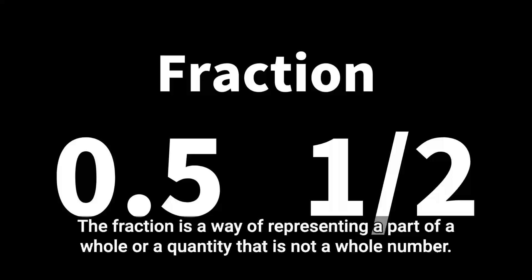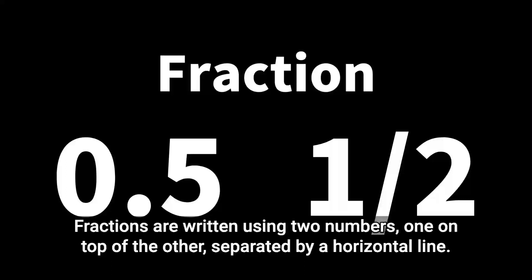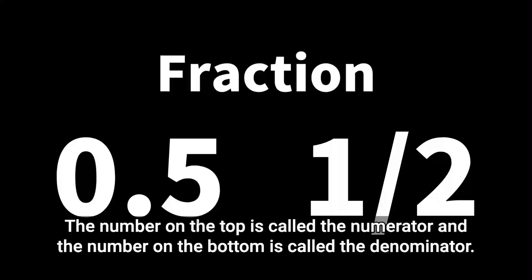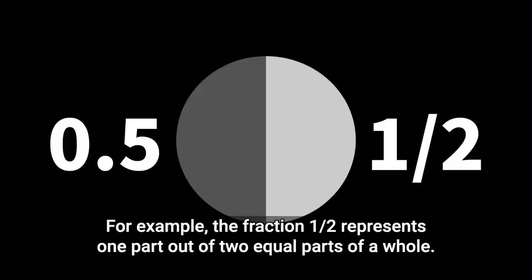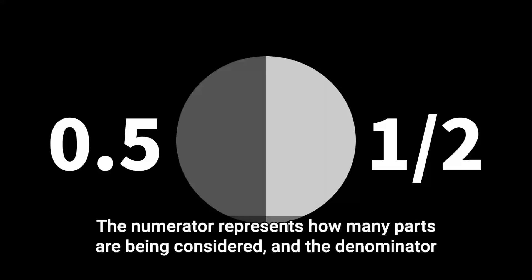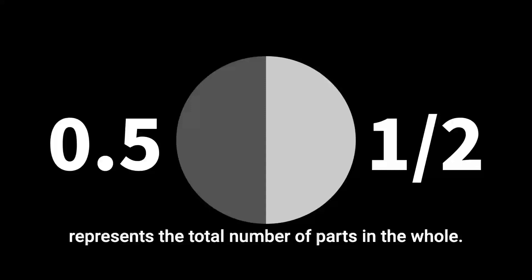A fraction is a way of representing a part of a whole or a quantity that is not a whole number. Fractions are written using two numbers, one on top of the other, separated by a horizontal line. The number on the top is called the numerator, and the number on the bottom is called the denominator. For example, the fraction one-half represents one part out of two equal parts of a whole. The numerator represents how many parts are being considered, and the denominator represents the total number of parts in the whole.